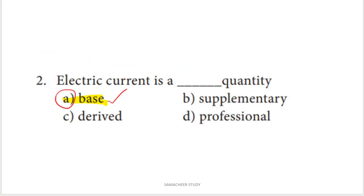Second question: electric current is a blank quantity. There are two different types of quantities — base quantities and derived quantities. In the subject of measurement, you will first learn the 7 base quantities. Electric current is one of the base quantities. That's why option A is the right answer.